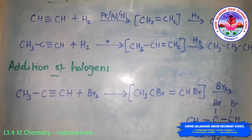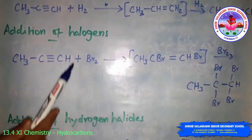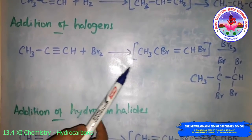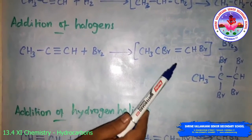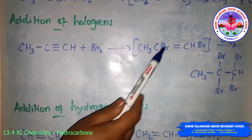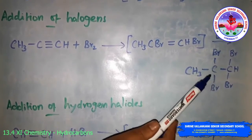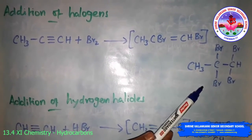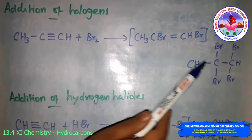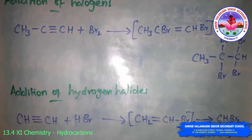Addition of halogen: adding bromine to propyne forms 1,2-dibromopropene. Further adding bromine gives 1,1,2,2-tetrabromopropane. This is the addition reaction of halogen.